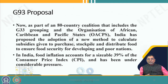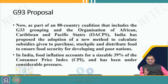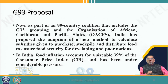A decision must come out before that. Importantly, a grouping of 93 countries submitted a proposal including the G33 grouping and the Organization of African, Caribbean and Pacific States. India has completely proposed a new methodology to calculate the subsidies given to purchase, stockpiling and distribution — not only the MSP system but also the distribution systems of poor nations.